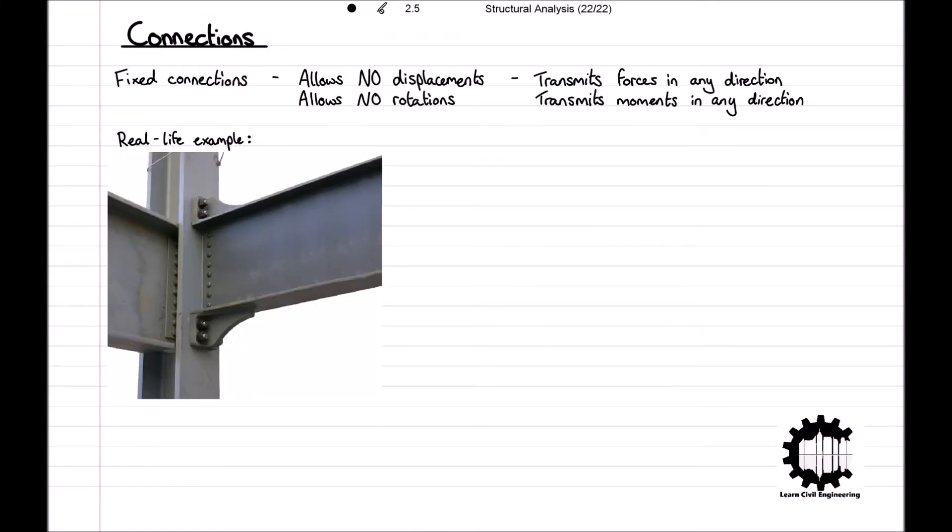Here we can see an example of a fixed connection in real life. The beam is connected to the column such that it cannot rotate or be displaced. And this is because when drawing two elements joined by a fixed connection, we just draw them together. For example, with our column and beam, we draw the column as a vertical line and then the horizontal line for the beam is just drawn attached to the column like so.